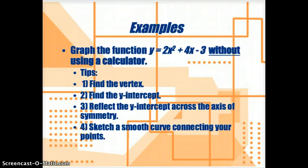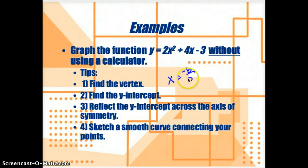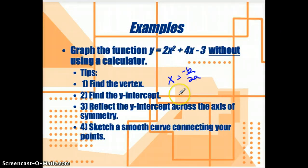We're going to graph some equations here, and I'm going to give you a lot of tips and then show how you can use them. If I ask you to graph a function like y equals 2x squared plus 4x minus 3 without a calculator, here are some tips. The first thing you want to do is find the vertex, using x equals negative b over 2a. Then you're going to find the y-intercept — hopefully you remember that's the value of c. Then you'll reflect your y-intercept across the axis of symmetry and make a smooth curve.